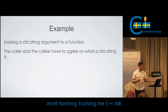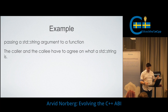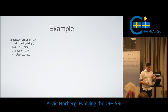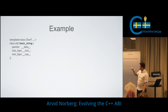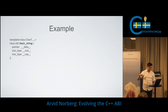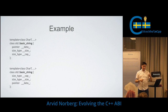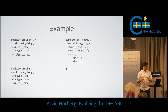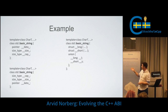As a concrete example: imagine you have a function that takes a std::string as an argument. The caller and the callee need to agree on what that std::string looks like. Does it have a pointer, then size, then capacity? Or capacity first, then size, then pointer? Or is it a union of a long string and a short string for small string optimization? If the caller and the function disagree on what std::string looks like, you will have a bad experience.